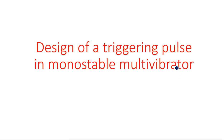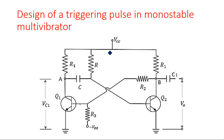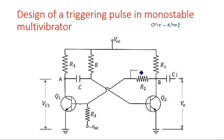In this video, I am going to explain how to give a triggering pulse to the monostable multivibrator. This is the monostable multivibrator, also known as a one-shot. It has one stable state and one quasi-stable state, which is a temporary stable state. If you observe the circuit diagram, there is a cross-coupling from collector to base of each transistor.